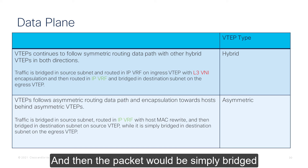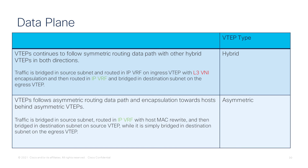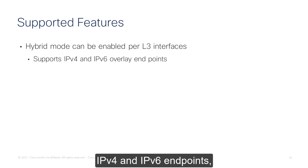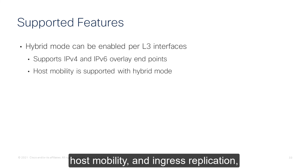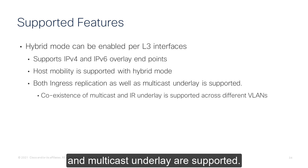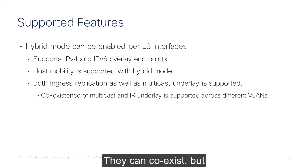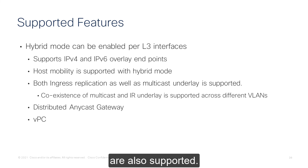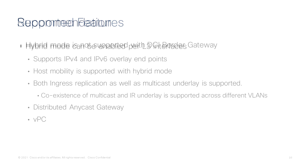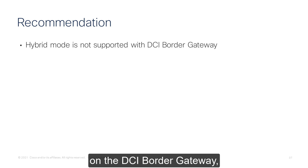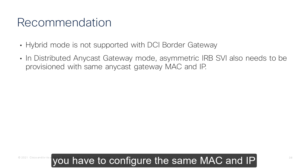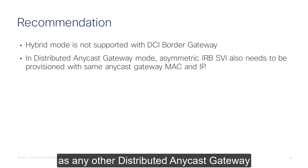Supported features with hybrid mode include IPv4 and IPv6 endpoints, host mobility, and ingress replication and multicast underlay. Ingress replication and multicast can coexist, but not for the same VLAN. A distributed anycast gateway and VPC VTEPs are also supported. Hybrid mode is not supported on the DCI border gateway. For the hybrid mode SVI, you must configure the same MAC and IP as any other distributed anycast gateway within the fabric.